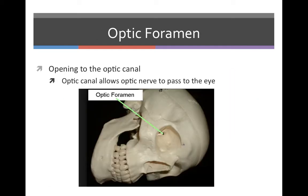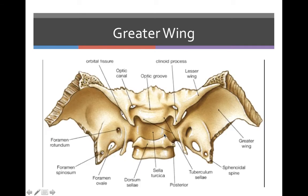The optic foramen is the opening to the optic canal. The optic canal allows optic nerves to pass to the eye. In this diagram, that opening right there is the optic foramen. The optic canal is also shown here, and the optic foramen is the beginning of the optic canal.